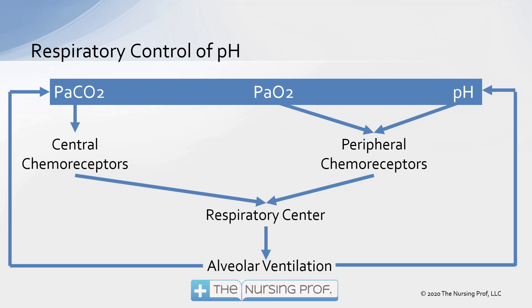Let's take a look at our respiratory control of pH. We have our PaCO2, our PaO2, and our pH. Those are all controlling our central and peripheral chemoreceptors, which then send impulses to the respiratory center in the brain to say we should breathe faster or breathe slower, depending upon the patient's pH, their CO2 level, and the PaO2. As you change the respiratory rate and alveolar ventilation, there will be changes in the CO2 — if we breathe faster or breathe slower, there are going to be changes in the CO2.